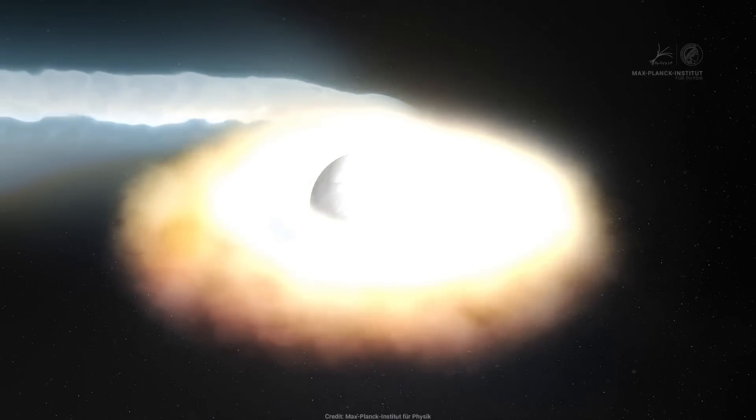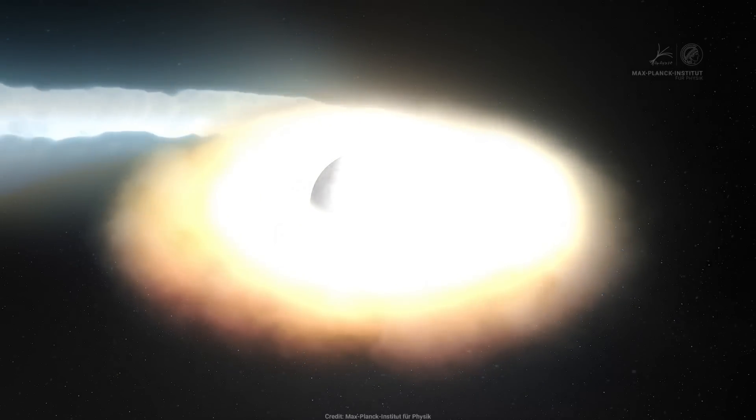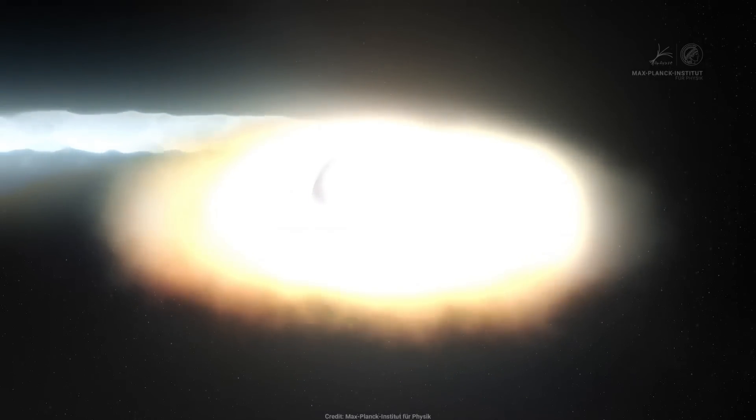As the white dwarf draws off material from the red giant, it gradually accumulates on its surface. Over decades, this process leads to the buildup of a critical mass of hydrogen on the white dwarf's surface.